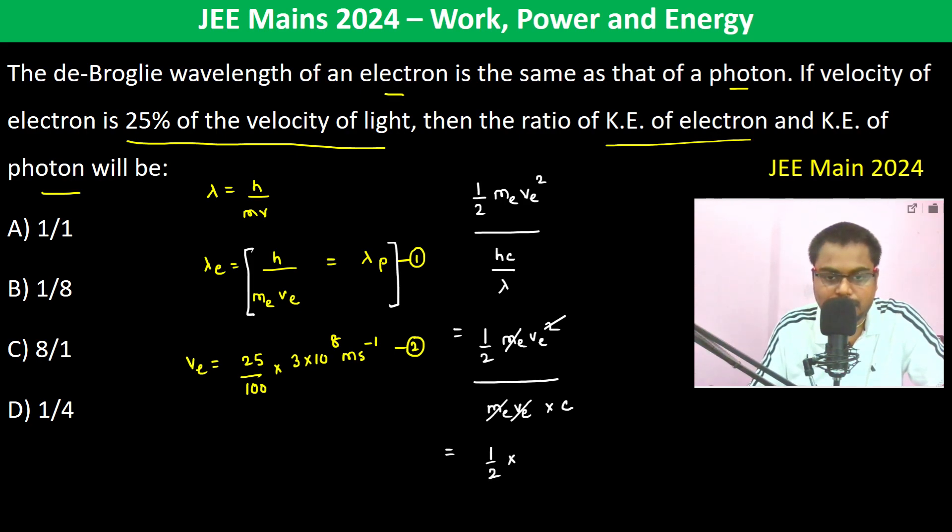Now what is v_e? v_e is 25 by 100 into c, so divided by c, gone. Therefore this is equal to 25 by 200 which is 1 by 8. So therefore the answer is going to be 1 by 8.